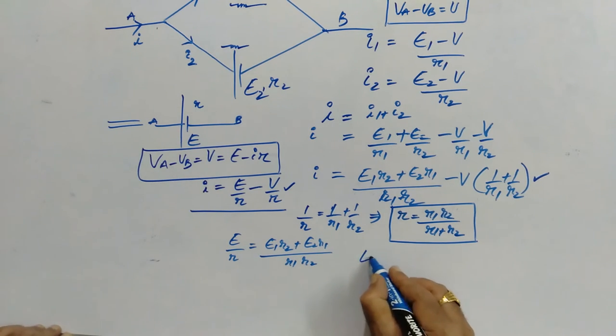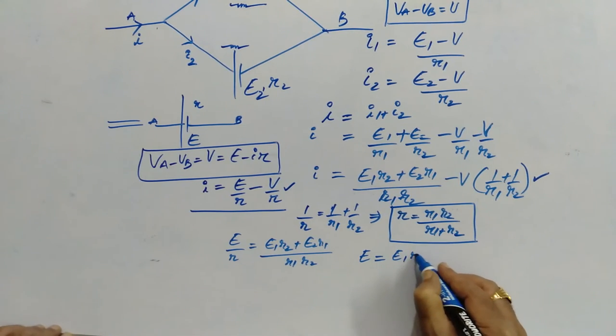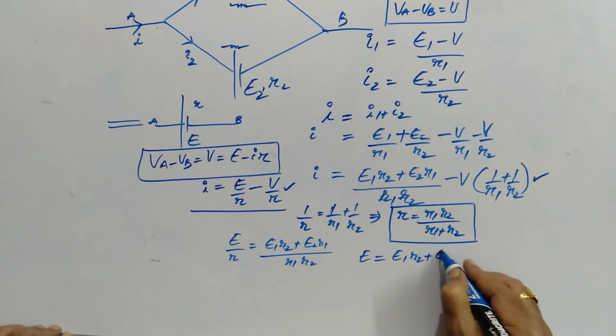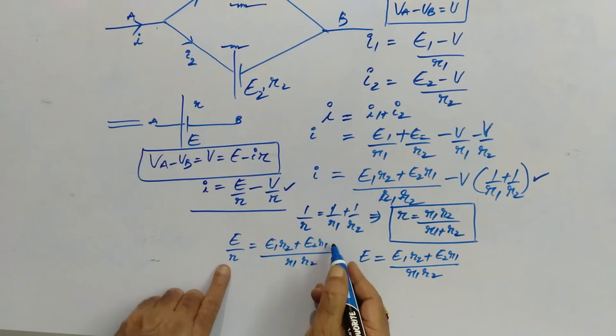what happens E is equal to E1 R2 plus E2 R1 by R1 R2. When this R goes to the numerator,